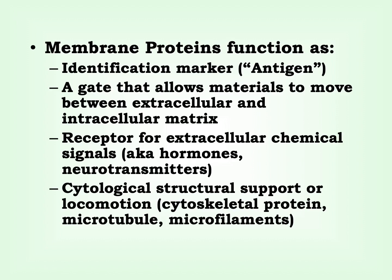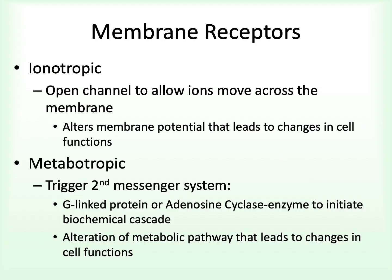Within the classification of membrane receptors, there are two distinct types you should be aware of: the ionotropic and the metabotropic. Ionotropic receptors allow for the opening of channels that permit ions to move across the membrane. The movement of ions will alter membrane potentials, and if we alter a membrane potential, we alter the way in which a cell functions.